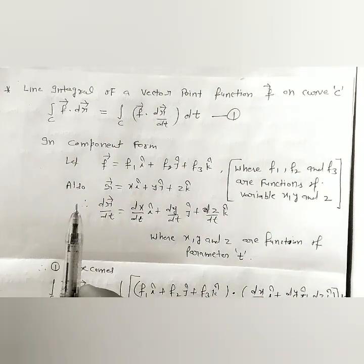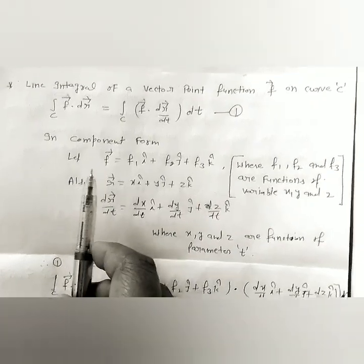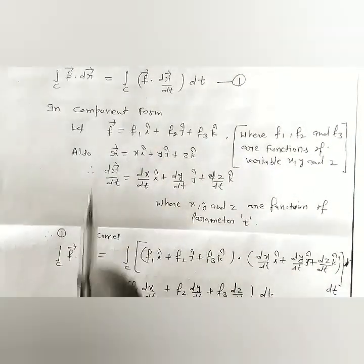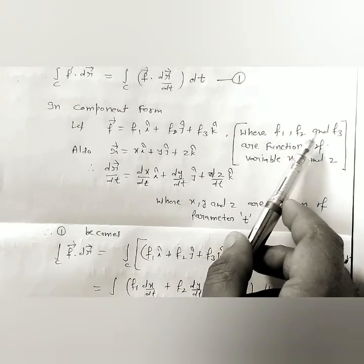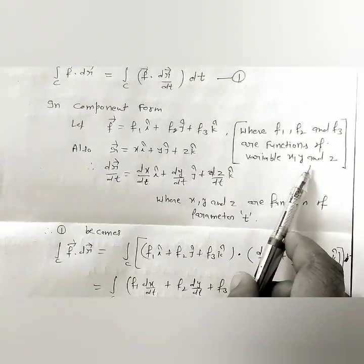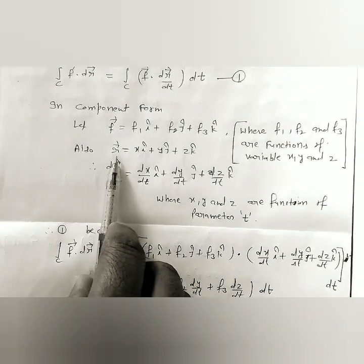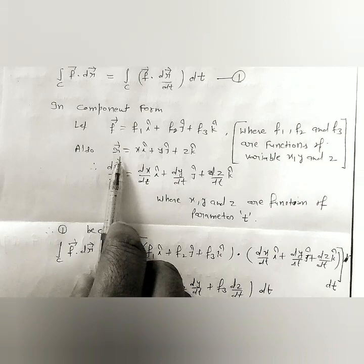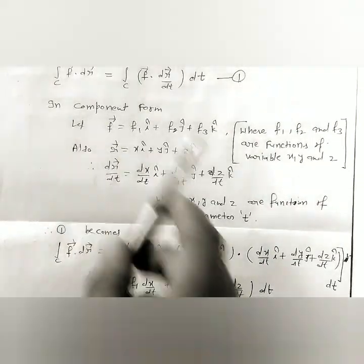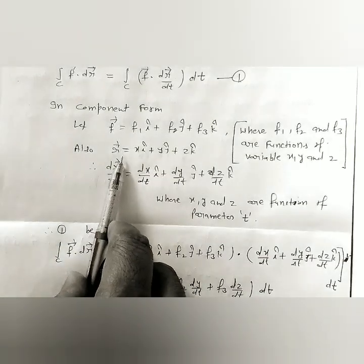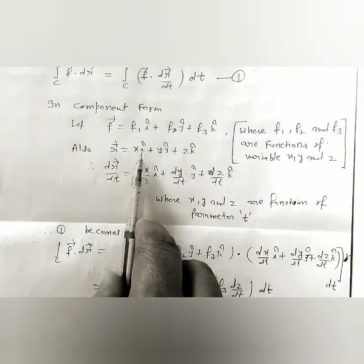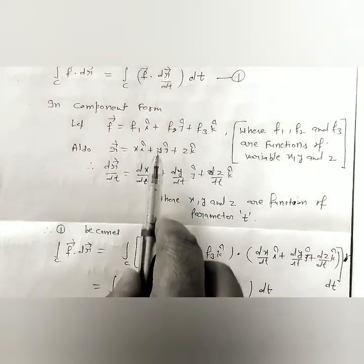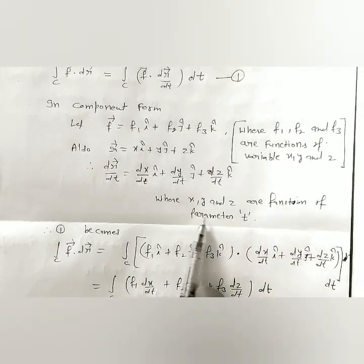Now we write the line integral of a vector point function on curve c in component form. Let f vector equal to f1 i plus f2 j plus f3 k, where f1, f2, and f3 are functions of variables x, y, and z. Let r vector represent the position vector of any point on the curve, so r vector equals xi plus yj plus zk.